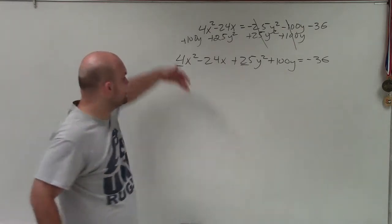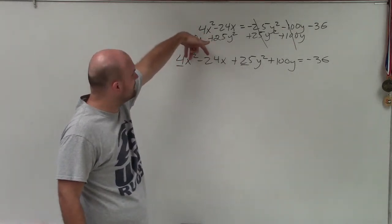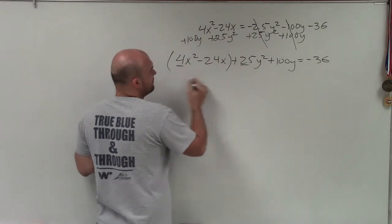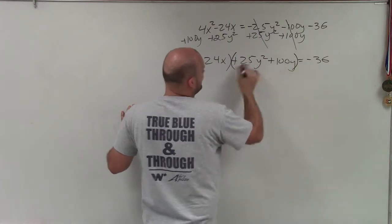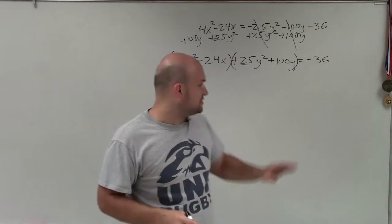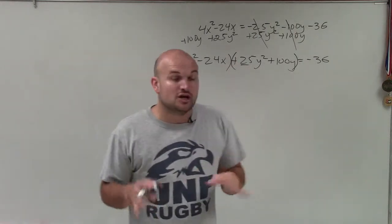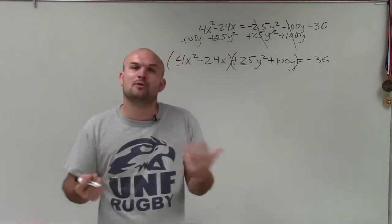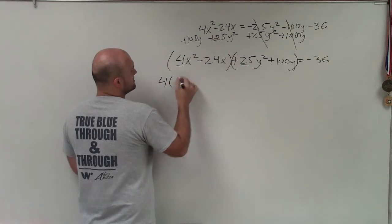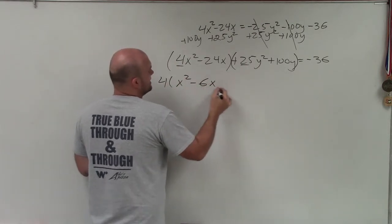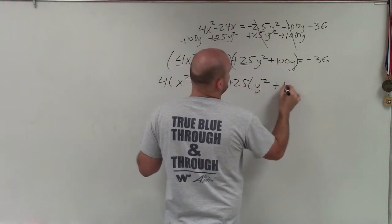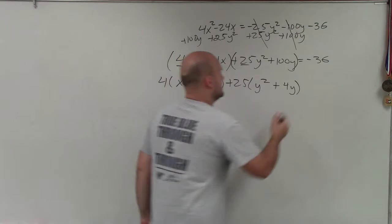Now we need to create our binomial squares by completing the square. To do that, we need to get rid of the coefficients on our quadratic terms by factoring them out — but only out of the two terms related to each variable. I'm going to factor out a 4 from the x terms and factor out a 25 from the y terms. So 4 gives me x squared minus 6x, and plus 25 times y squared plus 4y equals negative 36.